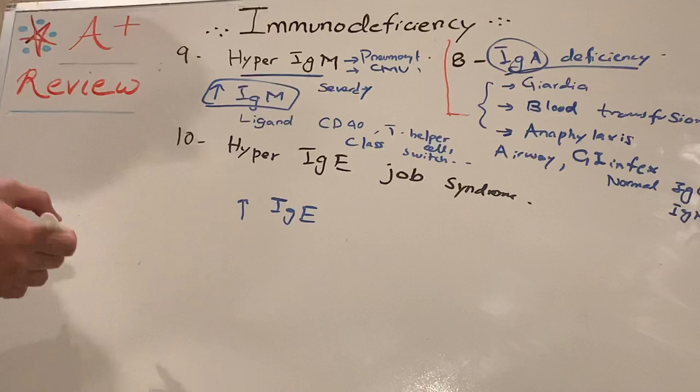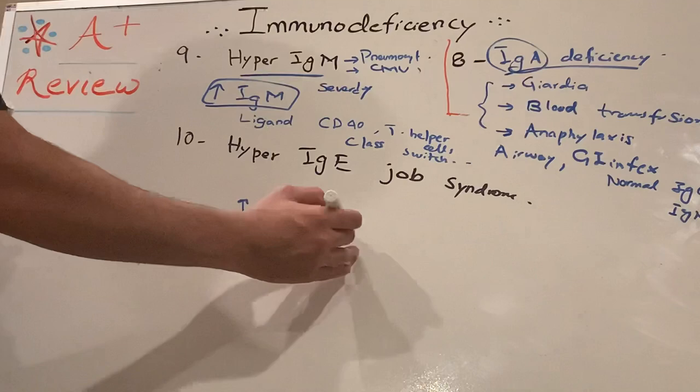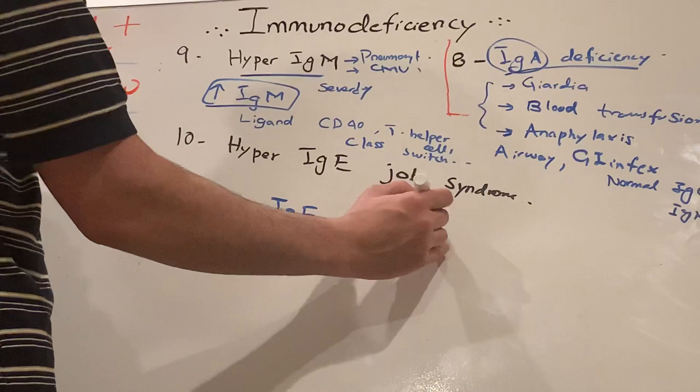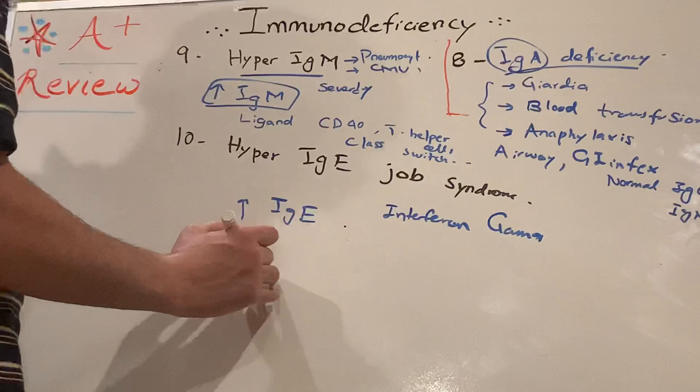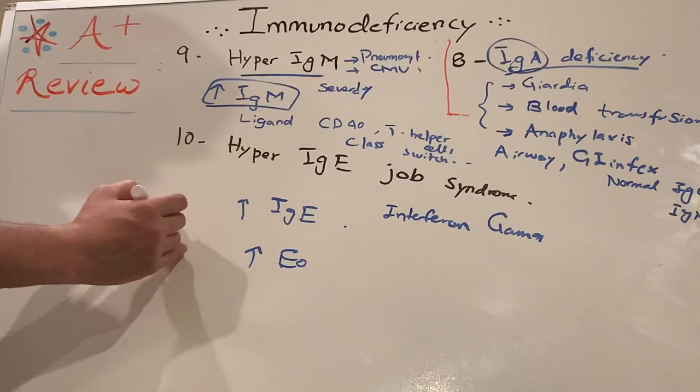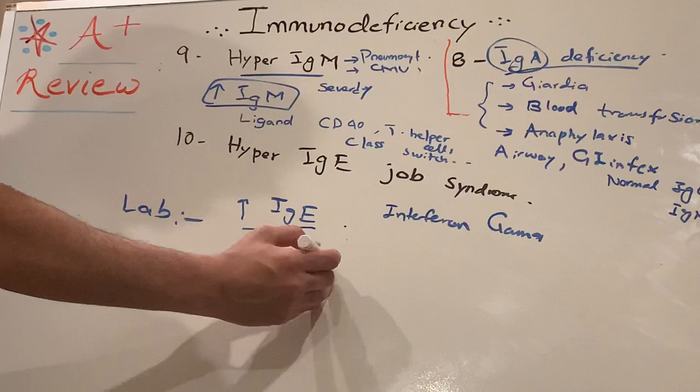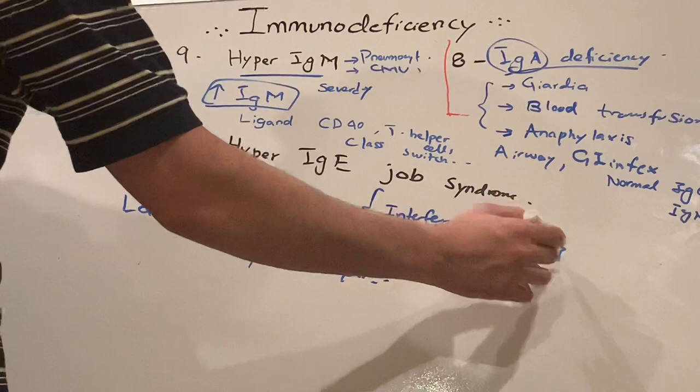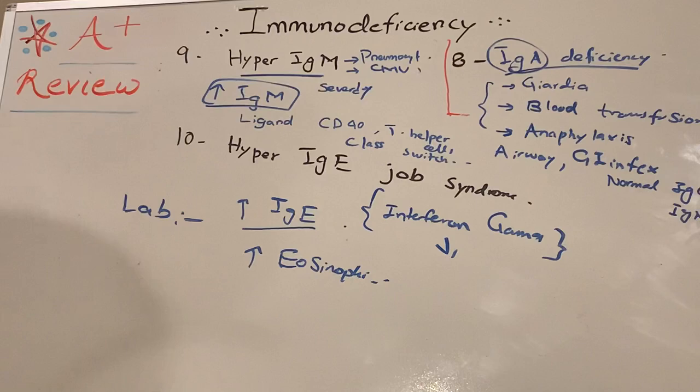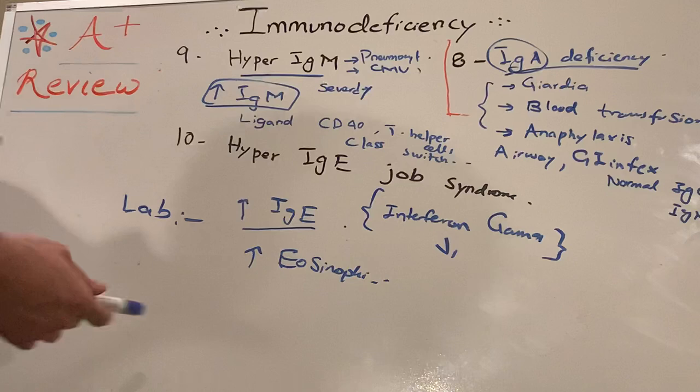Hyper IgE - what we need to know? Hyper IgE is increased. Other than that, basically they want decreased interferon gamma. And another good thing to notice: since it's IgE, you're going to have increased eosinophils. That's going to be tested - you can see in labs. The only thing is Hyper IgE is IgE increased with eosinophils will be high. Absolutely highly elevated. Interferon gamma decreased, right.